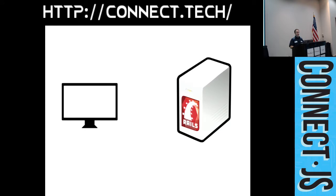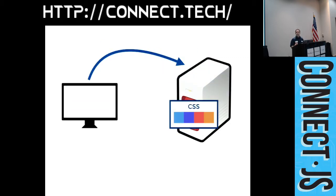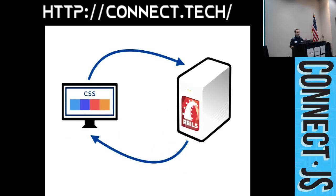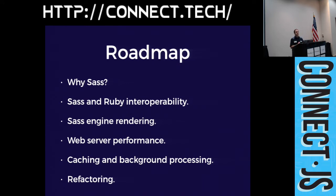The high-level overview: the client generates an HTTP request for a stylesheet, it gets passed to our Rails server, which generates CSS with the custom palettes and sends it back. Our roadmap: why Sass and what benefits it has, how to get interoperability between Sass and Ruby to inject user input, using the Sass::Engine class to render stylesheets, and how this can affect web server performance — plus ways to alleviate those issues such as caching, background processing, and refactoring.